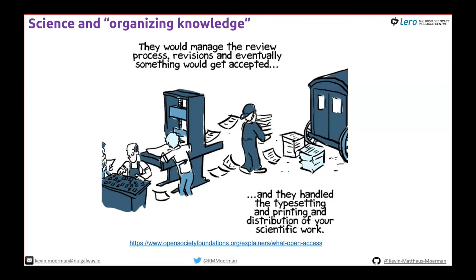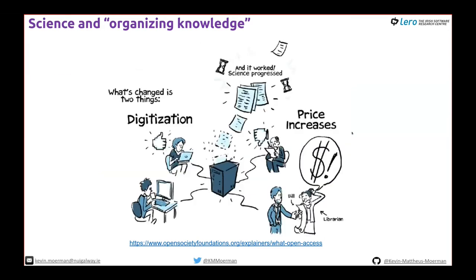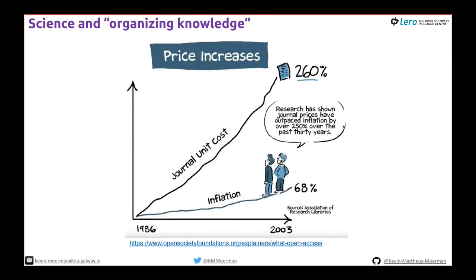Journals handled typesetting, printing, and distribution of scientific work, which could be costly. But with digitization, the typesetting is nearly done — your PDF already looks quite polished. It's digital now, no longer printed, so that cost is removed. It's very low cost and easy to host content online. But prices have increased rapidly — that's odd.